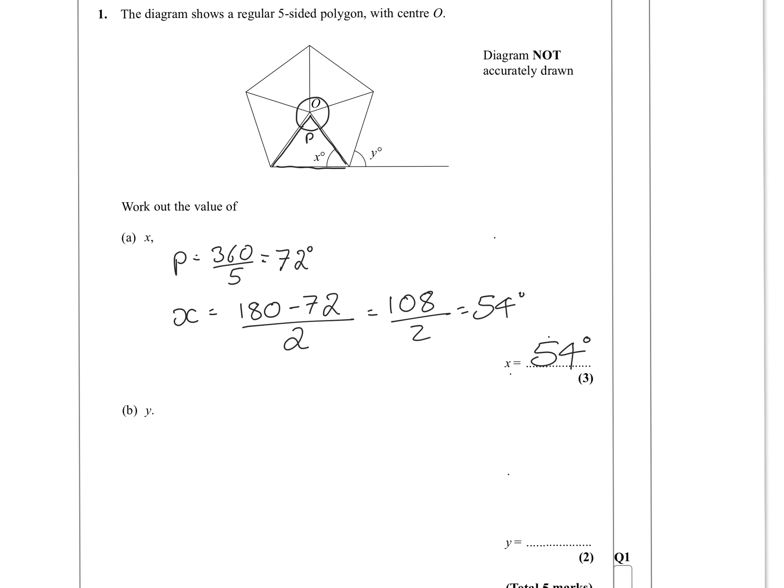Okay, and Y, well, Y is the exterior angle there. So there's two ways that we can do that. We can just say that Y is 360 divided by 5. It's a regular polygon, so they're all going to be the same.